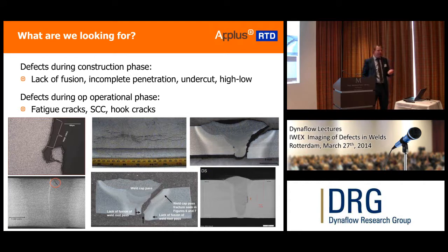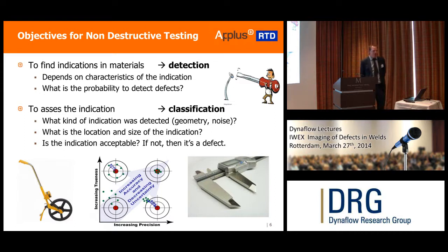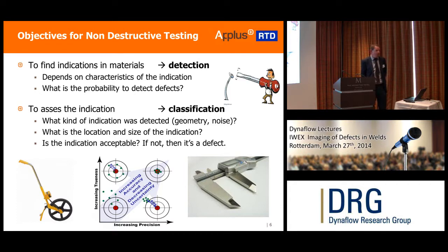Having seen the degradation mechanisms and what we're looking for, the next question is: how can we find it? For each non-destructive testing methodology, the first question is what we would like to find. The first step is to detect it — if we cannot detect it, we don't know it's there. Designing an NDT methodology first focuses on: can we detect it in the first place? That depends on the characteristics of the indication. We also want to know if it's capable of detection, because maybe we detect something that isn't there — a false call.